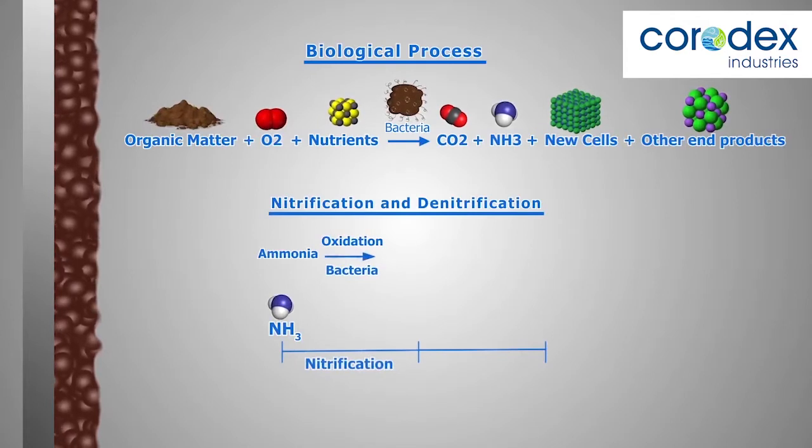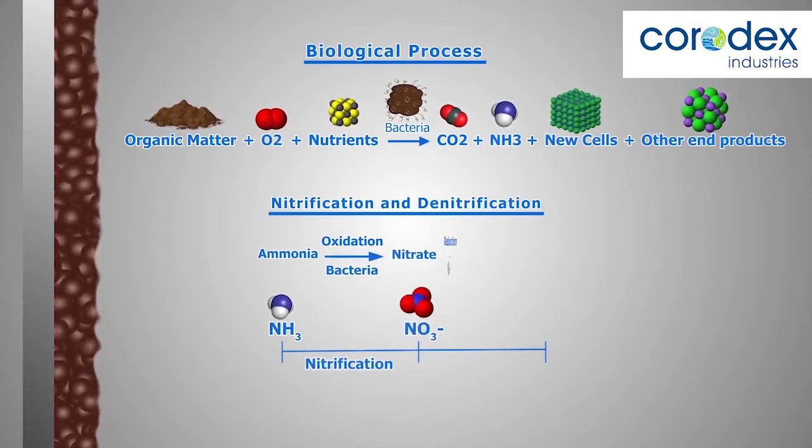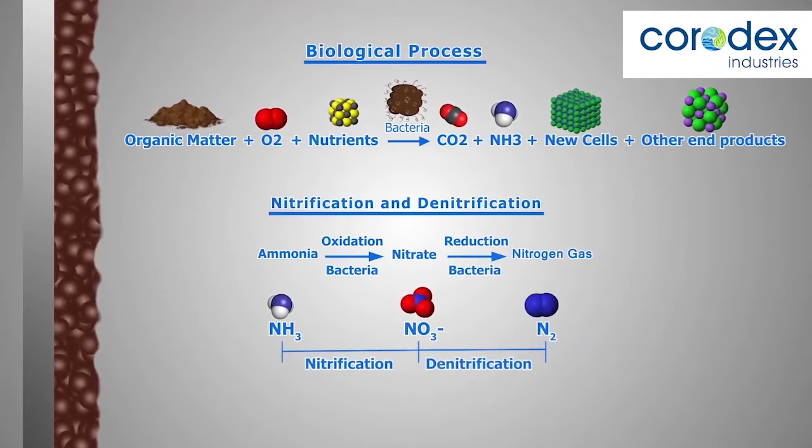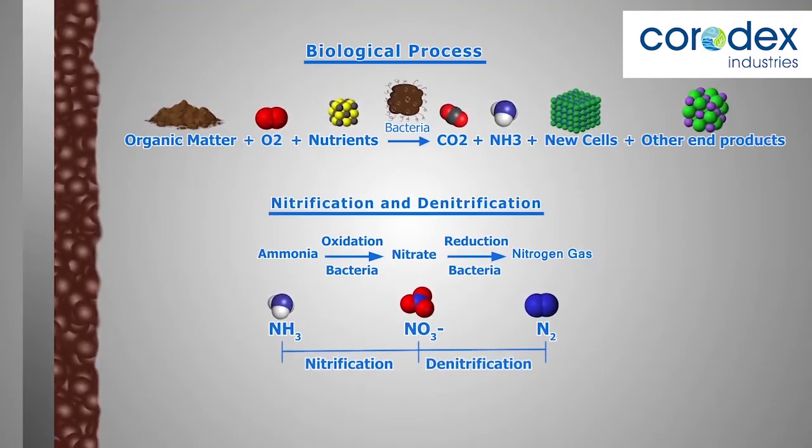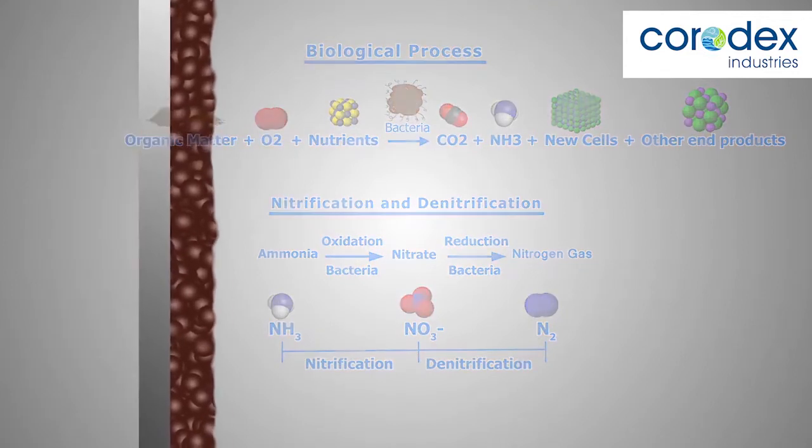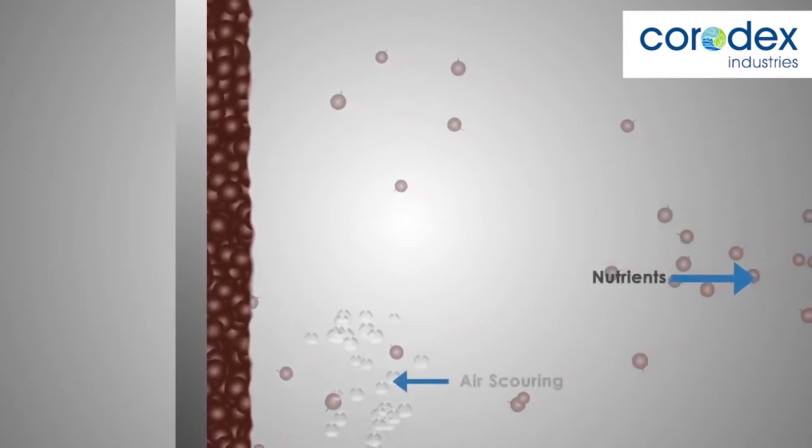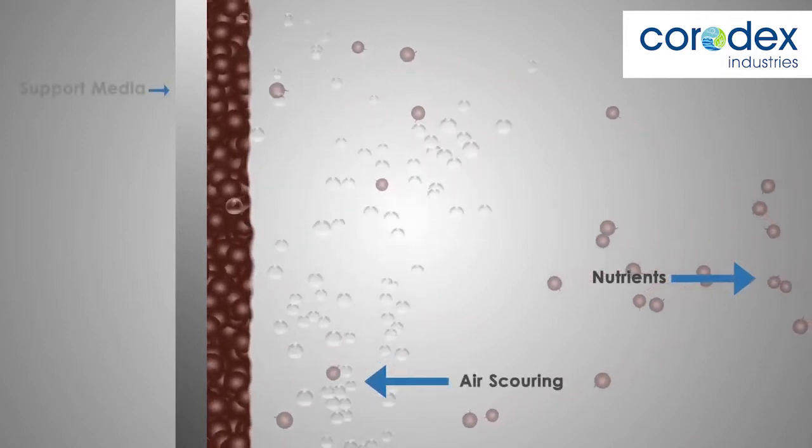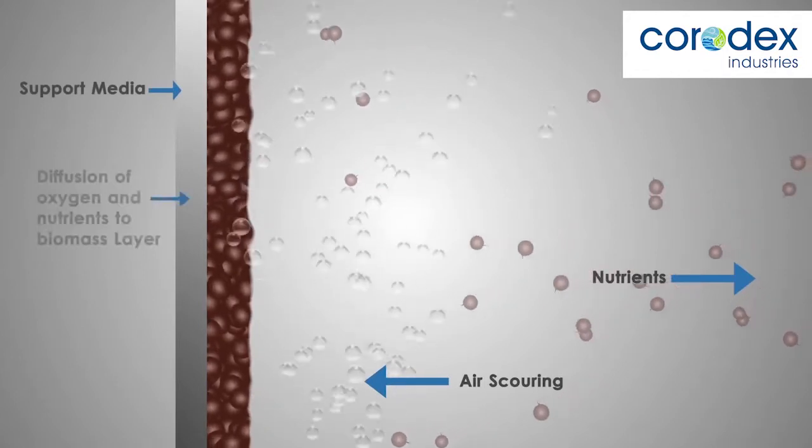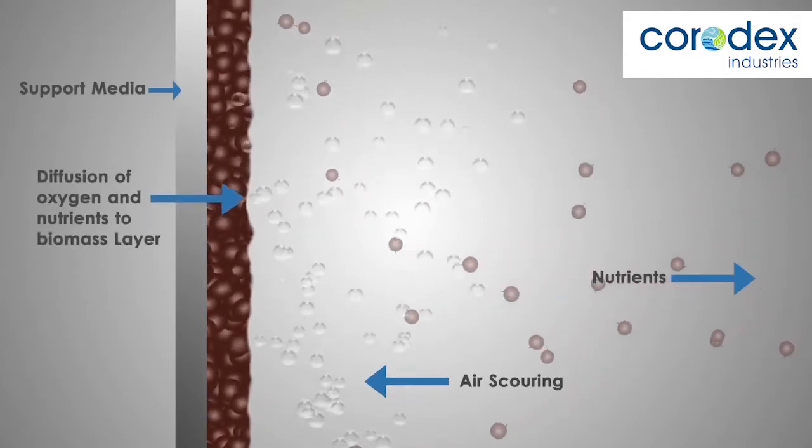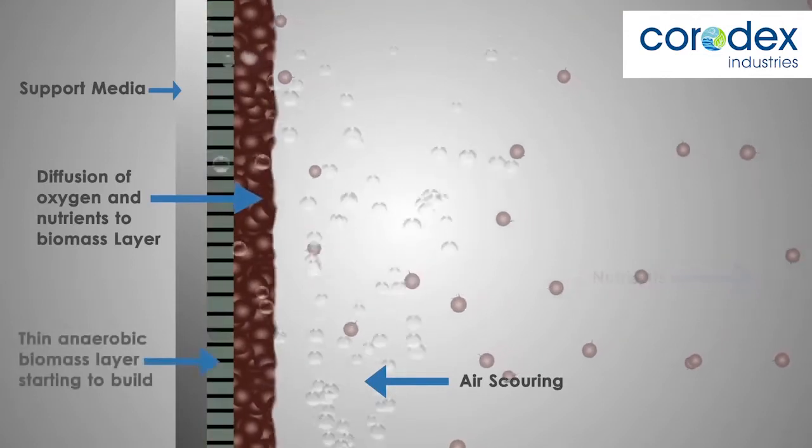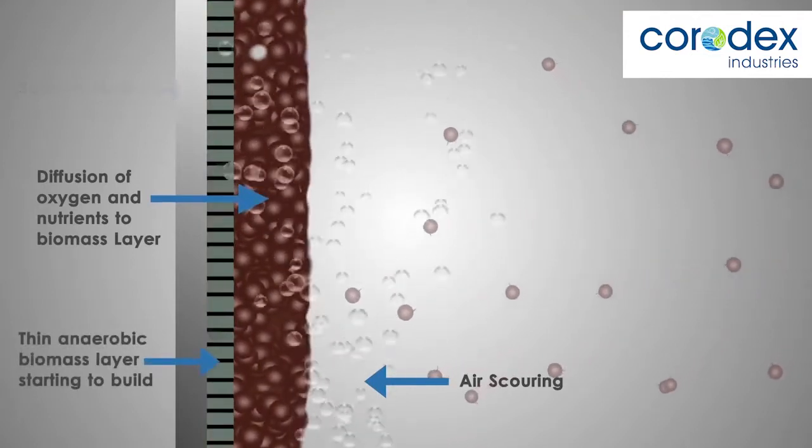The detachment occurs shortly after a thin anaerobic layer forms at the support media surface. This anaerobic layer forms when the biomass thickness prevents air from diffusing to the full depth of biomass. The polysaccharides firmly gluing the biomass to the media reduce, and the nitrogen bubbles along with the aeration scouring slough and chunk biomass from the media surface. New biomass rapidly grows in the place of the detached biomass and the process continues.